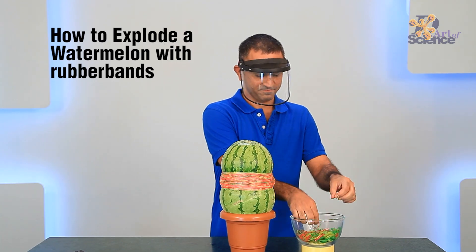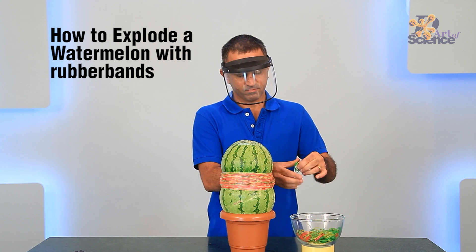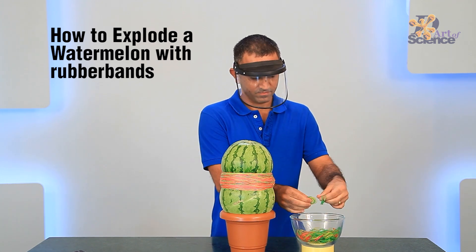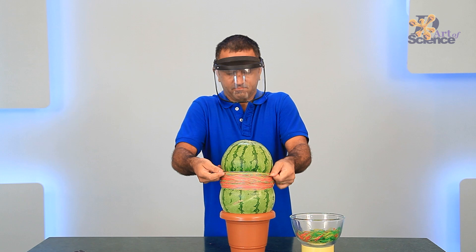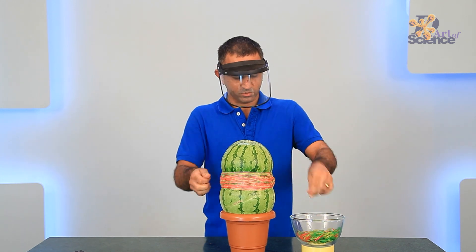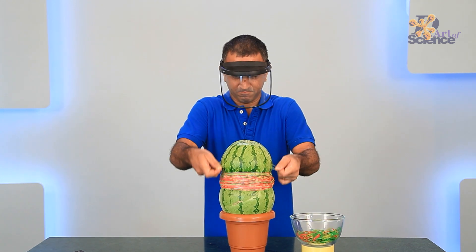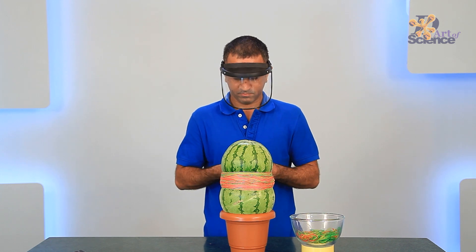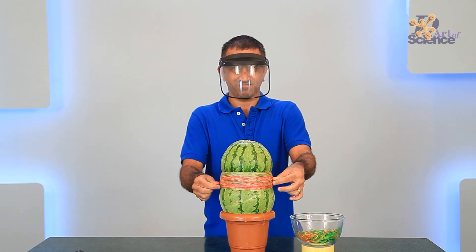This property of rubber bands not only allows us to launch things but also to explode them. Watch this video on how the combined elastic forces of hundreds of rubber bands increase the pressure on a section of the watermelon, eventually causing it to explode.